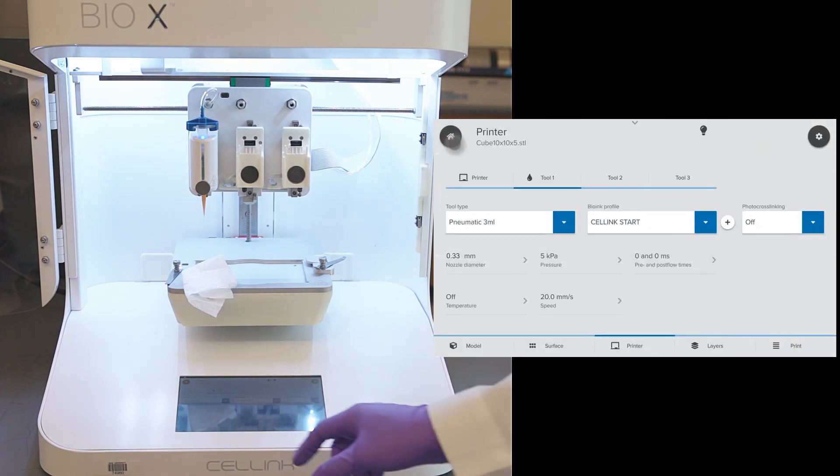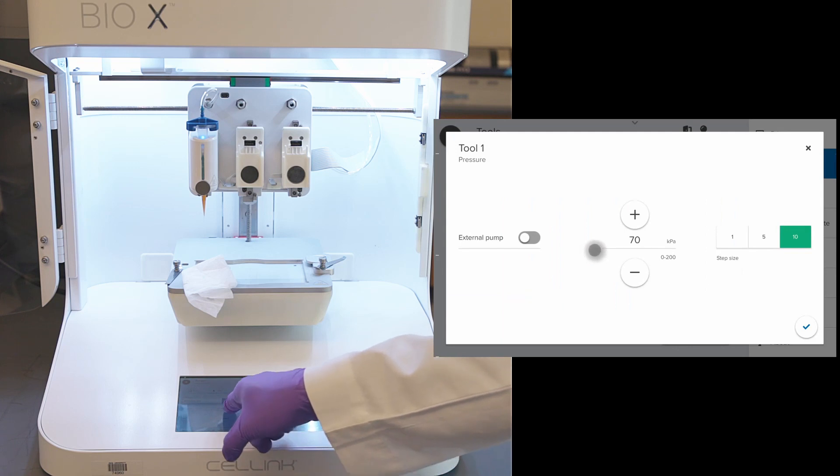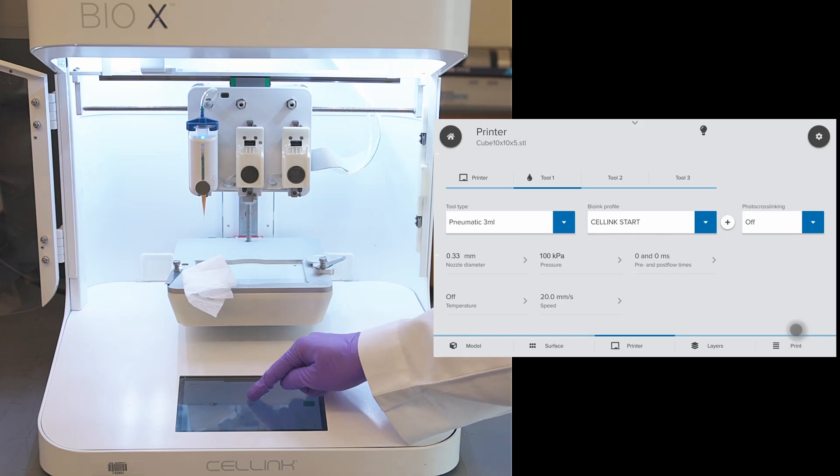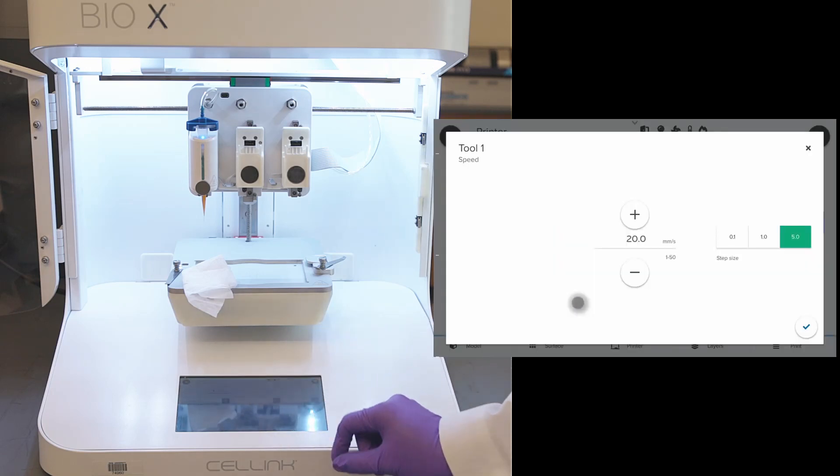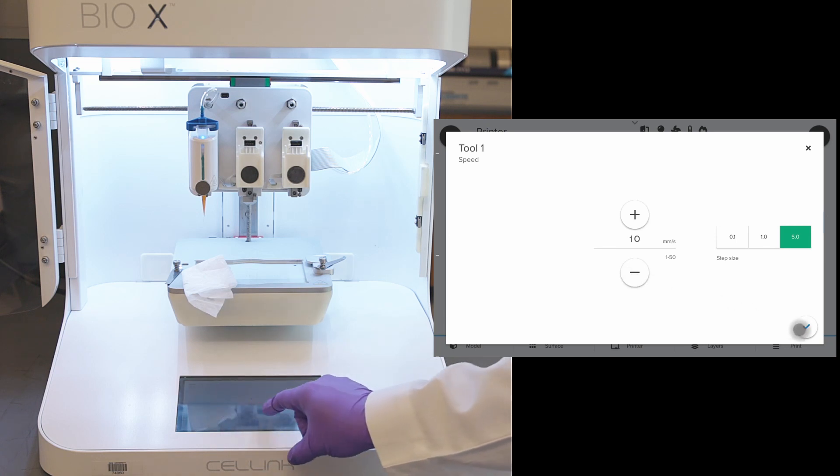Now, click on the home button to get back to the printer option. Here, we go to pressure and change the pressure to 100 kPa and hit OK. And the printing speed, we can change it as needed. I am going to reduce the speed to 10 mm per second and click OK.